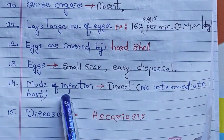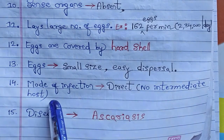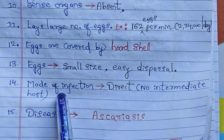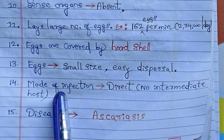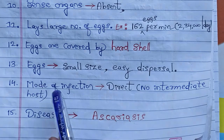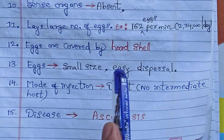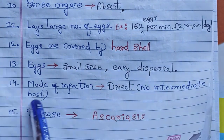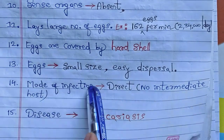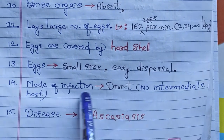The mode of infection is direct — no intermediate host is required. The life cycle of Ascaris involves only one host, making it a monogenetic life cycle. When the life cycle is completed in only one host, it is called the monogenetic condition. The only host is man, and no secondary host is needed.